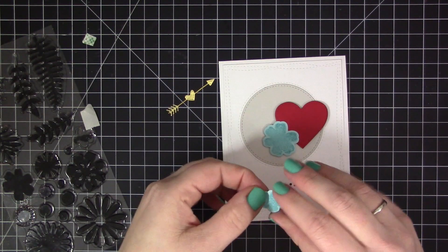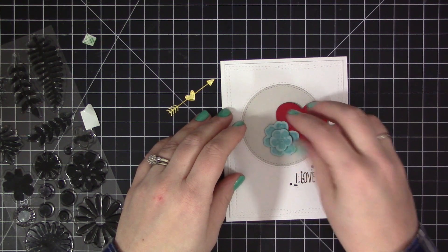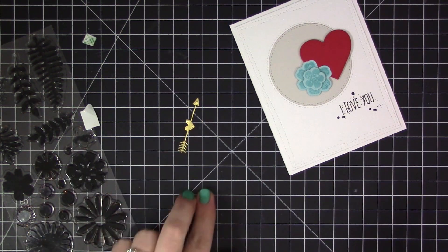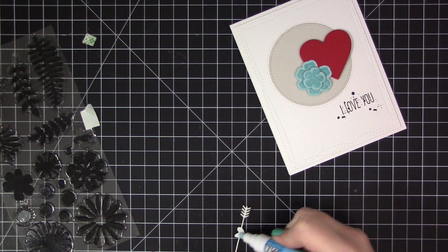I also added some foam adhesive to the smaller flower to give it even more dimension. I think that when you have a cluster of images like this, it really adds to the overall look when you have stuff at different heights coming off the card design.